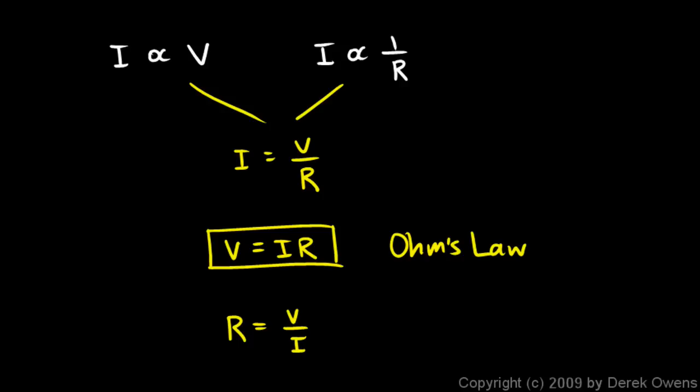Now writing it this way tells us something about resistance. If we look at this down at the bottom, V, the voltage, is in volts, and I, the current, is in amps. So we have volts per amp. So you can think of the resistance of something as how many volts it takes to get an amp of current to flow. If it takes a lot of voltage to get one amp to flow, then it's a high resistance. That means the material has a high resistance.